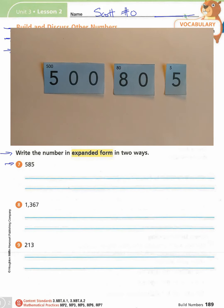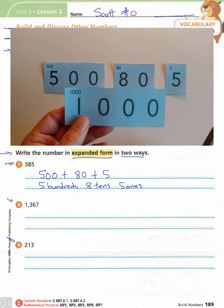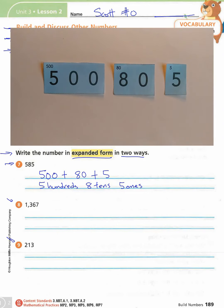We're doing the reverse of what we did above. We write 500 plus 80 plus 5 — that's the expanded form one way. The other way is: five hundreds, eight tens, and five ones. That's writing expanded form in two different ways. Do the same for problems eight and nine, and make sure you have your thousands card ready. Pause the video, complete those, then start it back up.